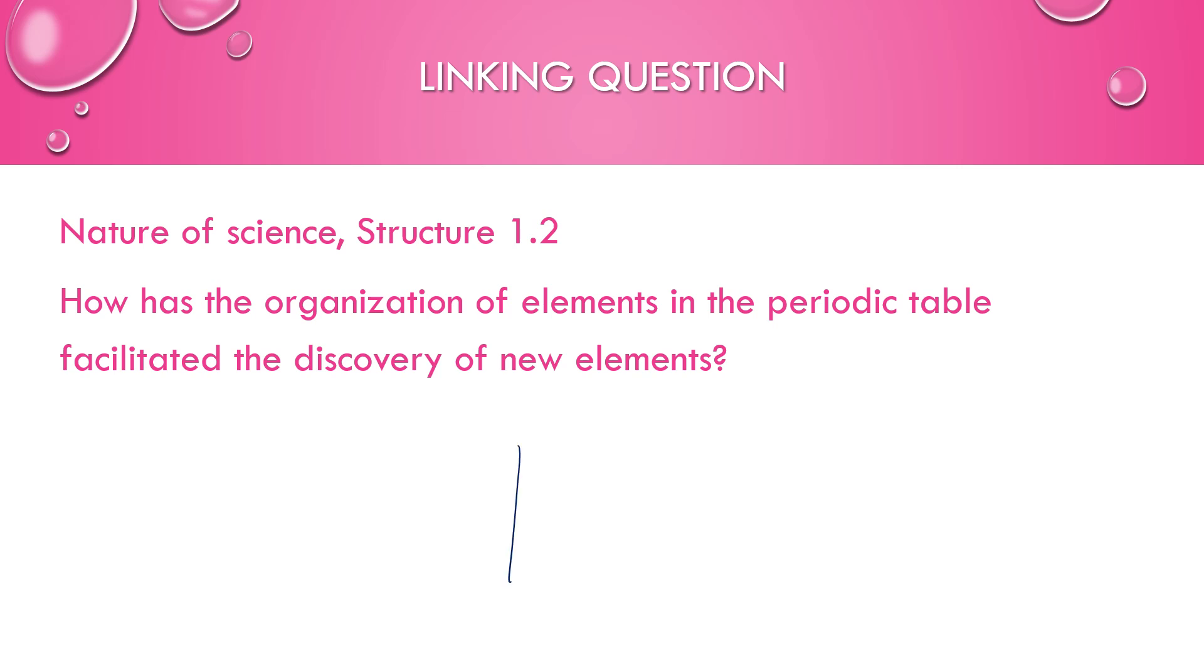We're going to get into periodicity, but effectively there was an empty space here. They knew that there was an element that had similar chemical properties of the elements above and below, and somewhere in between the mass of the elements from left to right. So they were able to predict the existence of that unknown element based off of the patterns of reactivity and mass from the periodic table.